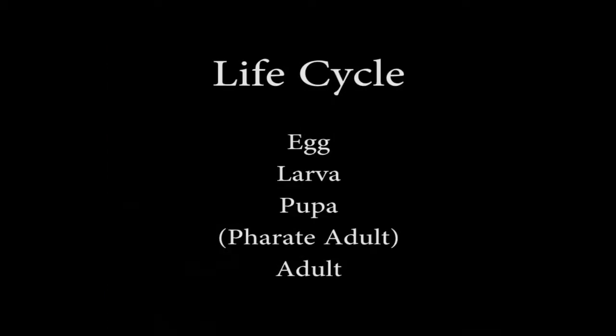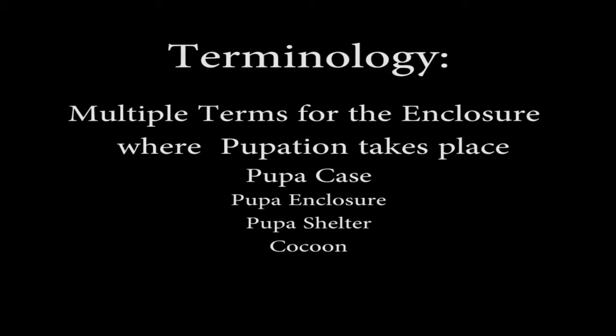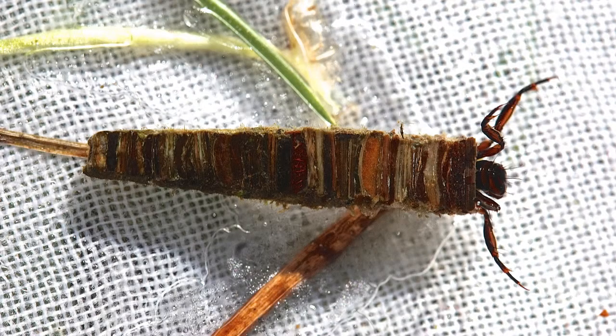In the previous video, Caddis 1, we talked about recognizing caddis and spent most of our time talking about tying and fishing the caddis larva. Today we'll move on to the caddis pupa and also talk about the term 'ferret adult,' which you will see in caddis literature. Technically, the larva becomes a pupa when it sheds its larval skin, and it does this within a protective enclosure, which goes by variable names as listed here.